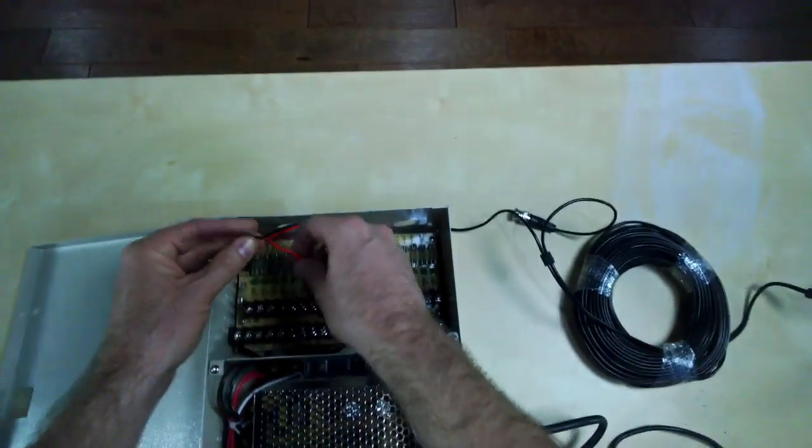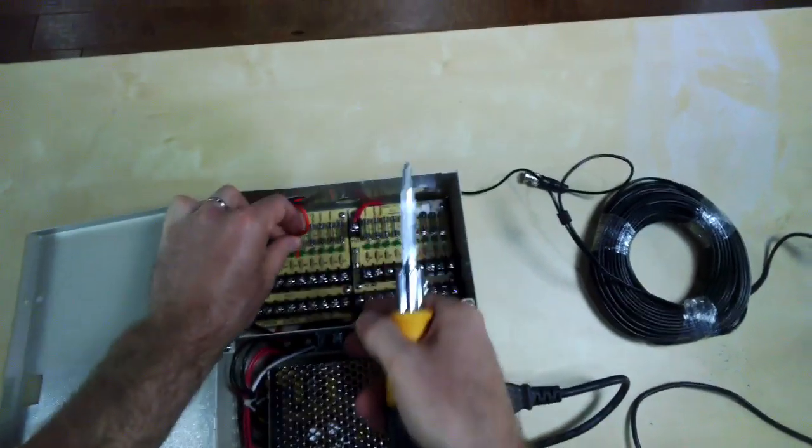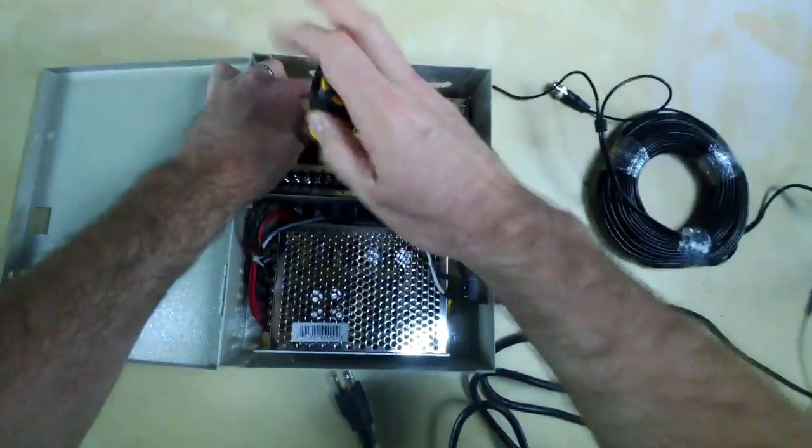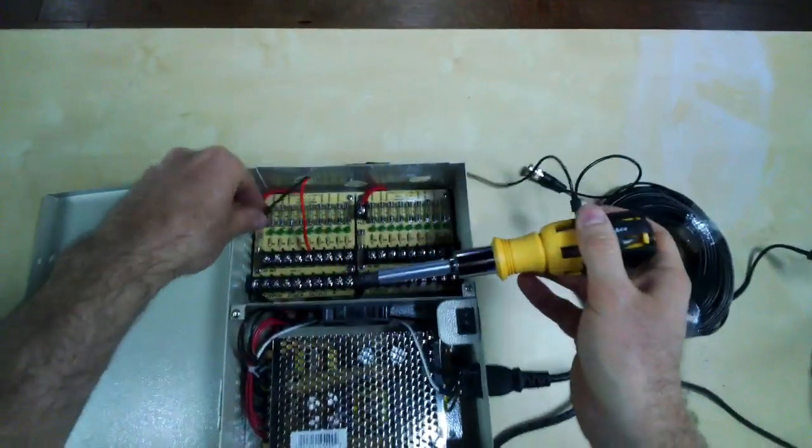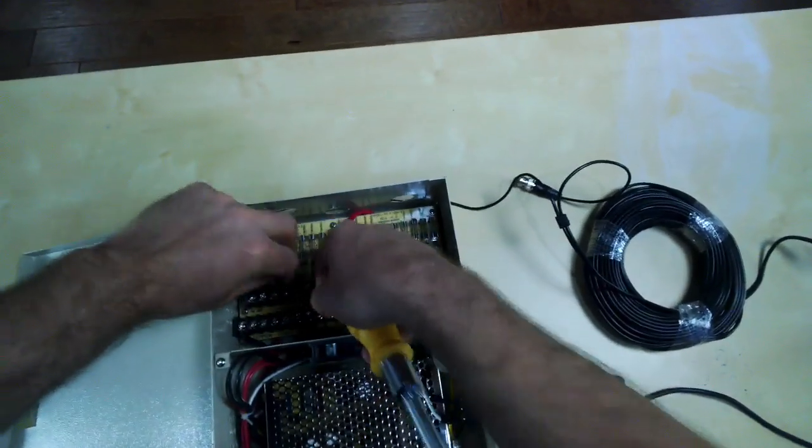Which will be the red and black wire. And these are just standard screw terminals. You just insert the wire, and then tighten it down. There's the positive, and then here's the ground.